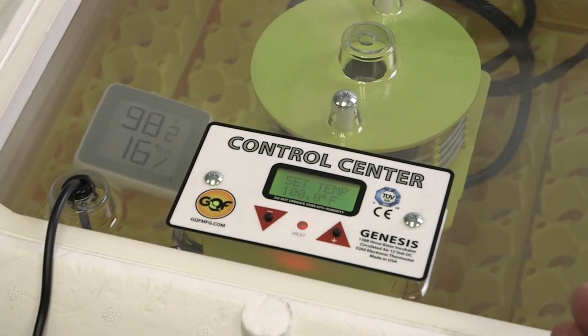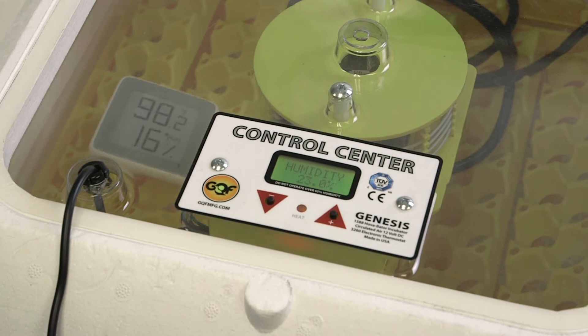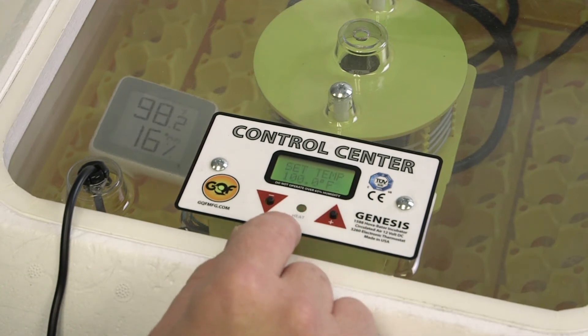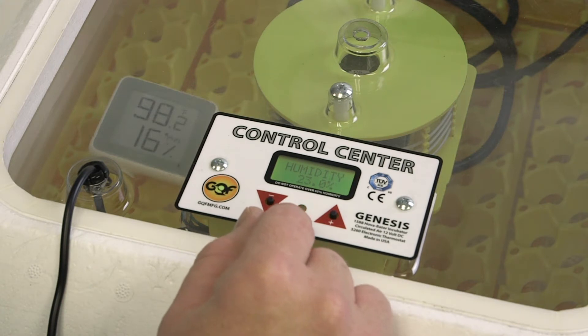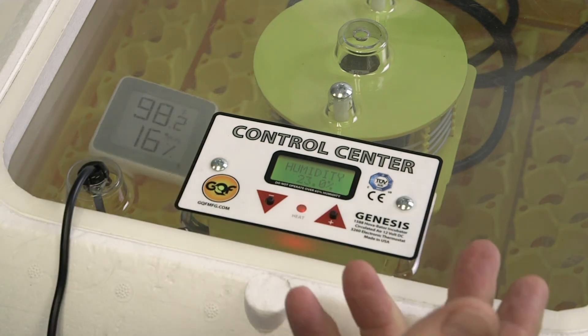The latest version of the Genesis 1588 works very similar to the previous version, except the light is going to blink constantly as it's regulating temperature. Whenever it's cycling, it's going to blink constantly. You also have a day counter.